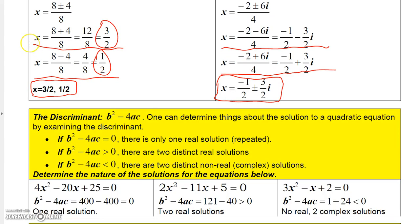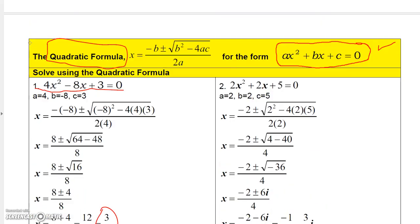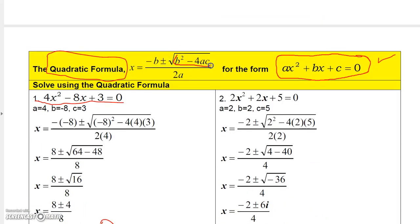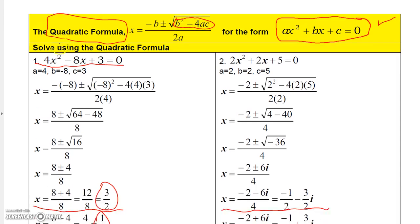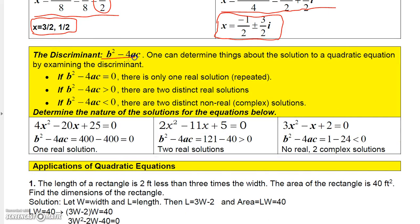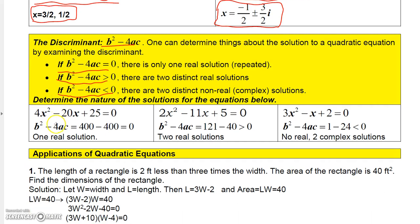Let's wrap up by talking about the discriminant. Looking inside the radical in the quadratic formula, you see b squared minus 4ac — that expression has a special name: the discriminant. If the discriminant is 0, you get exactly one real solution. If the discriminant is positive, you get two distinct real solutions. If the discriminant is negative, you get two distinct non-real, or complex, solutions.